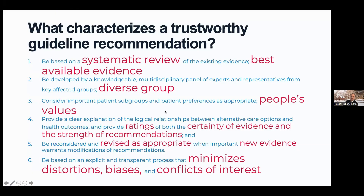To start, what characterizes a trustworthy guideline? Recommendations should be based on systematic reviews of the best available evidence, produced by multidisciplinary panels, considering people's values — particularly regarding outcomes. They should include ratings of the certainty of the evidence and the strength of the recommendation, be kept up to date or revised as appropriate when new evidence warrants modifications, and should minimize distortions, biases, and conflicts of interest.